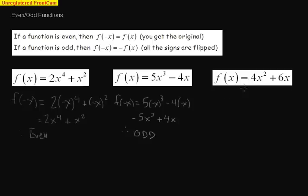And finally, our last one here, we have 4x squared plus 6x. So again, if I plug in negative x, I get 4 times negative x squared plus 6 times negative x.